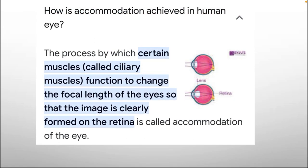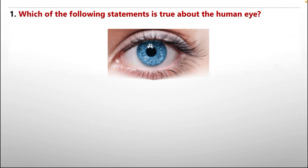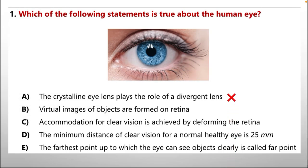Option C: How is accommodation achieved in the human eye? The process by which ciliary muscles change the focal length of the eye so that the image is clearly formed on the retina is called accommodation. According to that explanation, option C is also incorrect, as it states accommodation is achieved by deforming the retina.